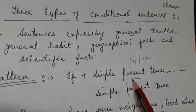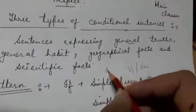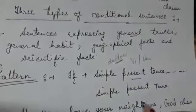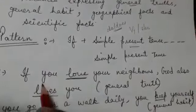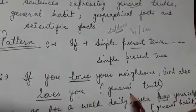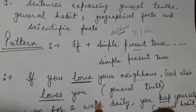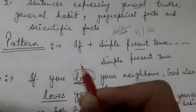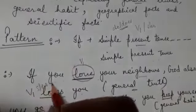If the sentence is negative or interrogative, then there will be do or does. See this sentence: If you love your neighbors, God also loves you. Journal truth hai ke agar aap apne neighbors ko pyaar kerte ho, toh God bhi aapko pyaar kerta hai. Here we used verb's first form in the if clause, and verb's first form with s or es in the main clause.